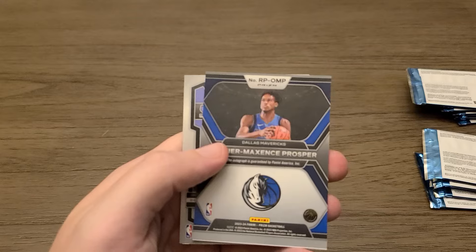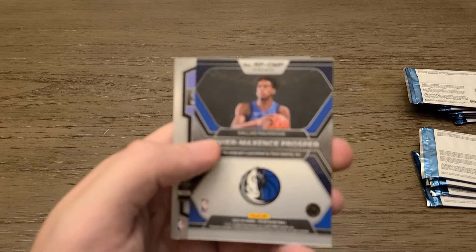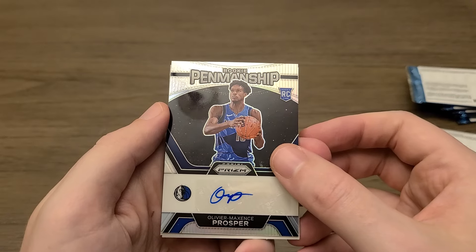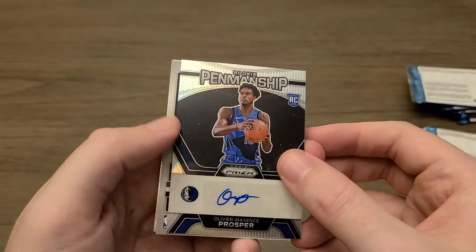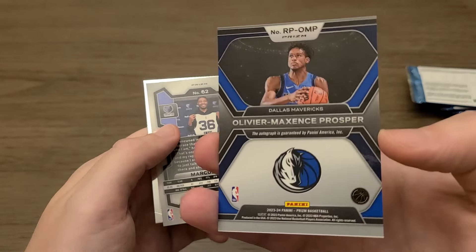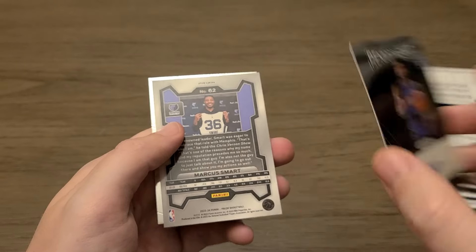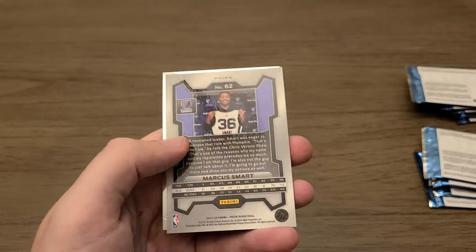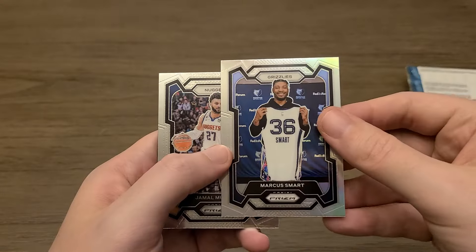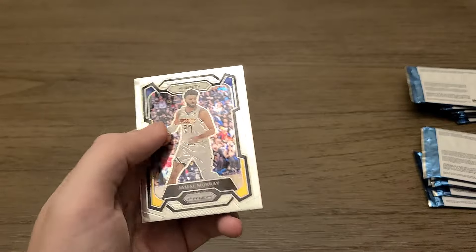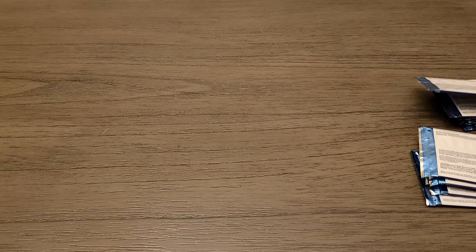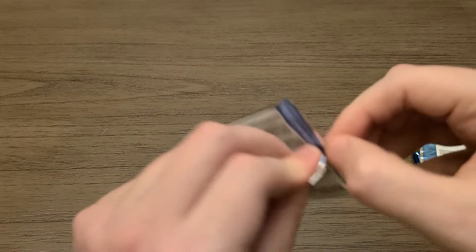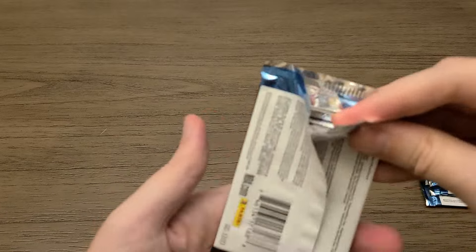Lonnie Walker. Oh! Oh! It's an autograph! Look at that! Shazam! A rookie penmanship of Olivier Maxence Prosper. Look at that! A Prism rookie auto. Wow! I don't know anything about him. But an autograph is an autograph. And we get a Marcus Smart Silver Prism. Very cool. Again, don't know anything about this Prosper gentleman, but an autograph is an autograph. You're not guaranteed one, so it's nice to get one.